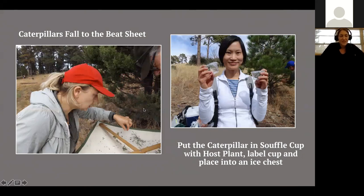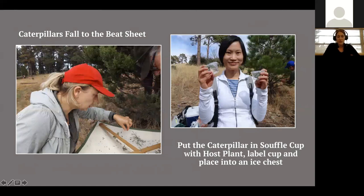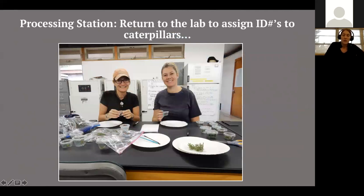Once you find a caterpillar, you put it in a little soufflé cup with a piece of its host plant — its dormitory until it becomes an adult, or until a parasitoid emerges. Always label properly: collection location, date, etc. We put them in ice chests with ice packs so they don't overheat. Then we take all samples back to the lab, give them an identification number, and work off white plates so we don't lose the caterpillar, since they blend in with host plant material.